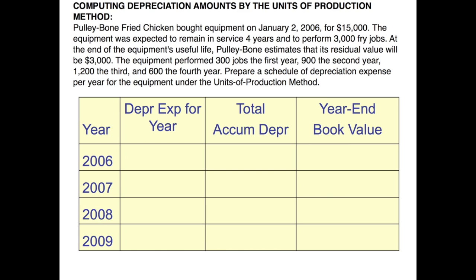We need depreciable cost divided by the total number of jobs or units produced during the life of the asset. Well in this case we're talking about jobs that this equipment can do. The cost of the asset is $15,000 less residual value which they tell us in the story is $3,000. That gives me a depreciable cost of $12,000 divided by the 3,000 jobs gives me depreciation per unit, in this case per job, of $4 per job.